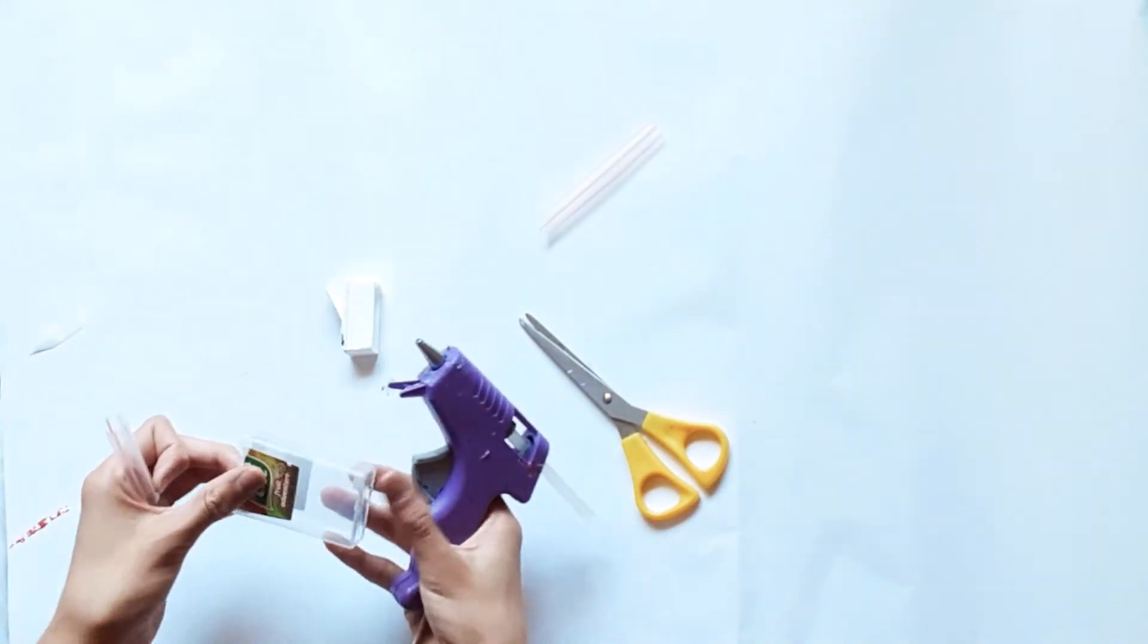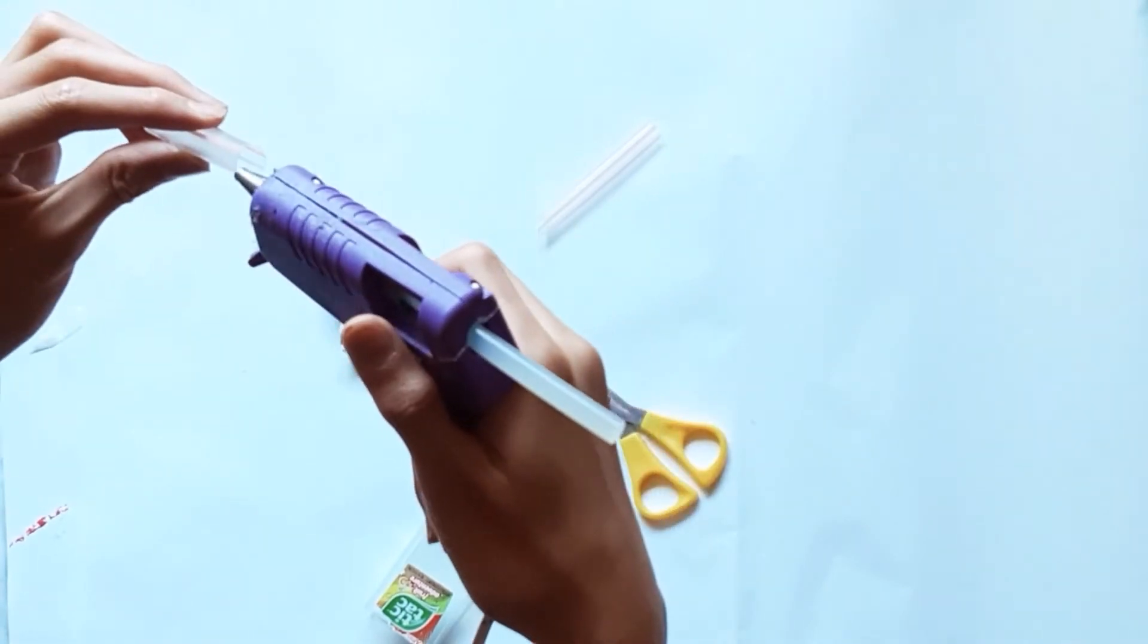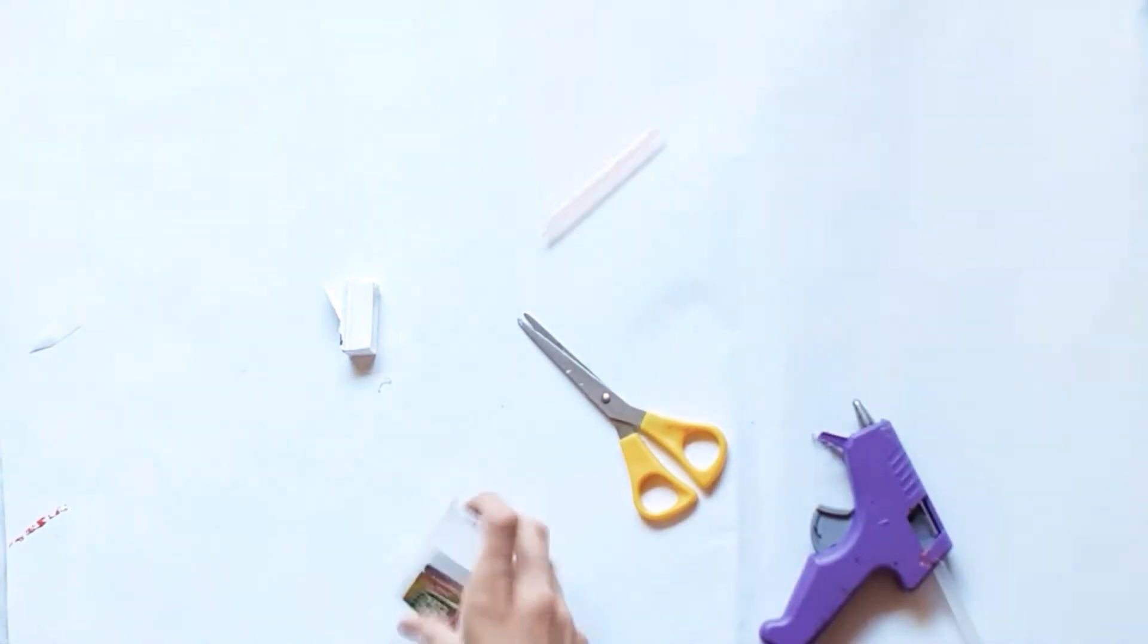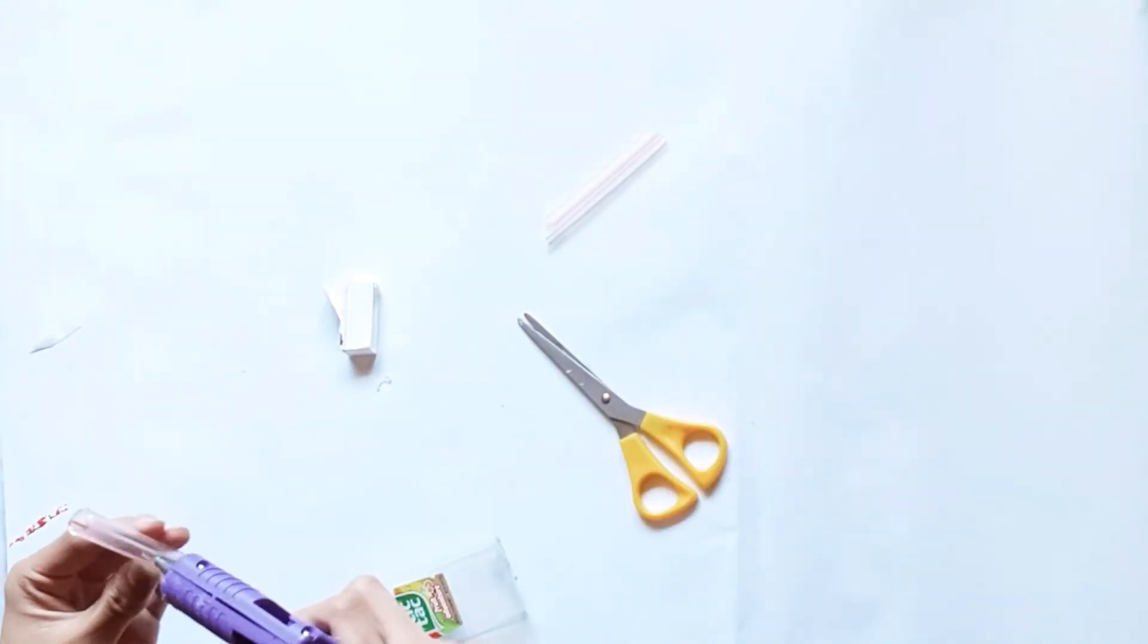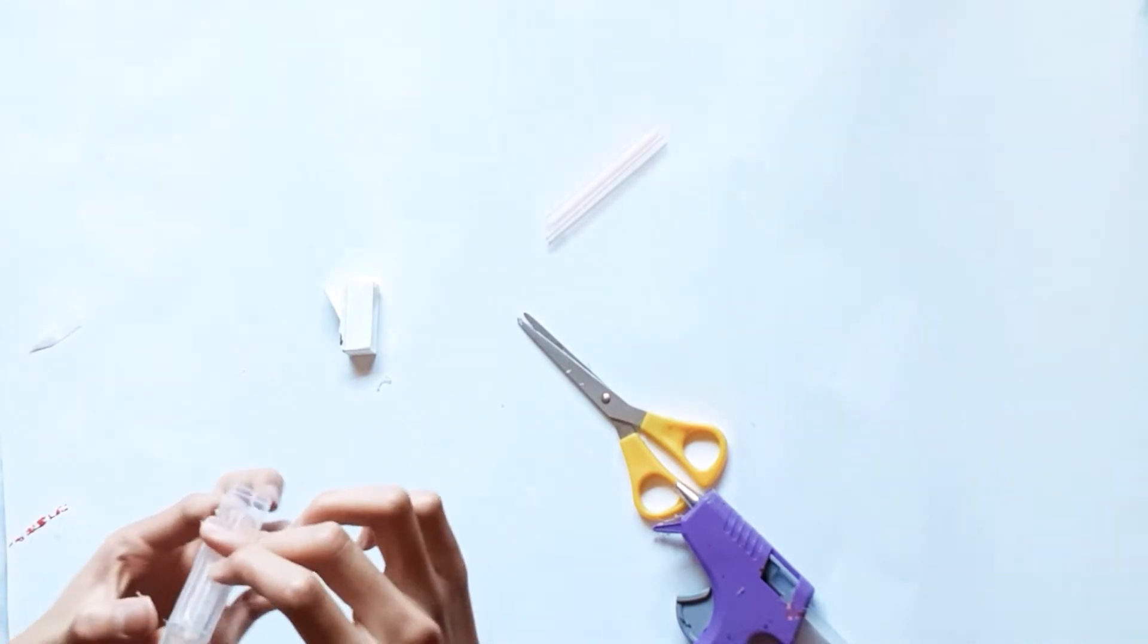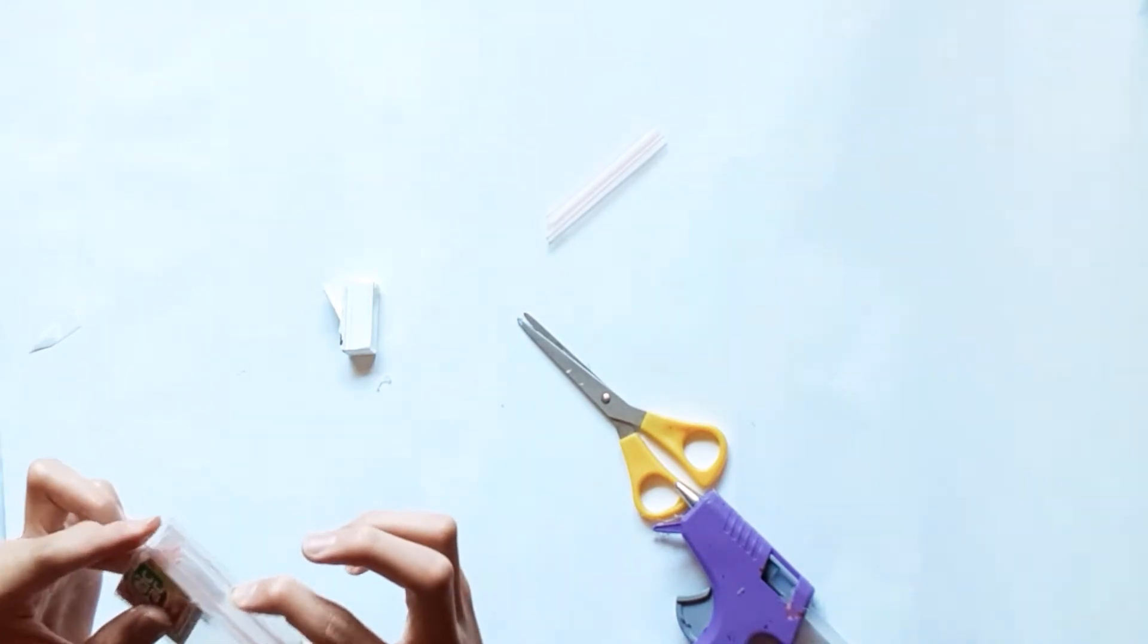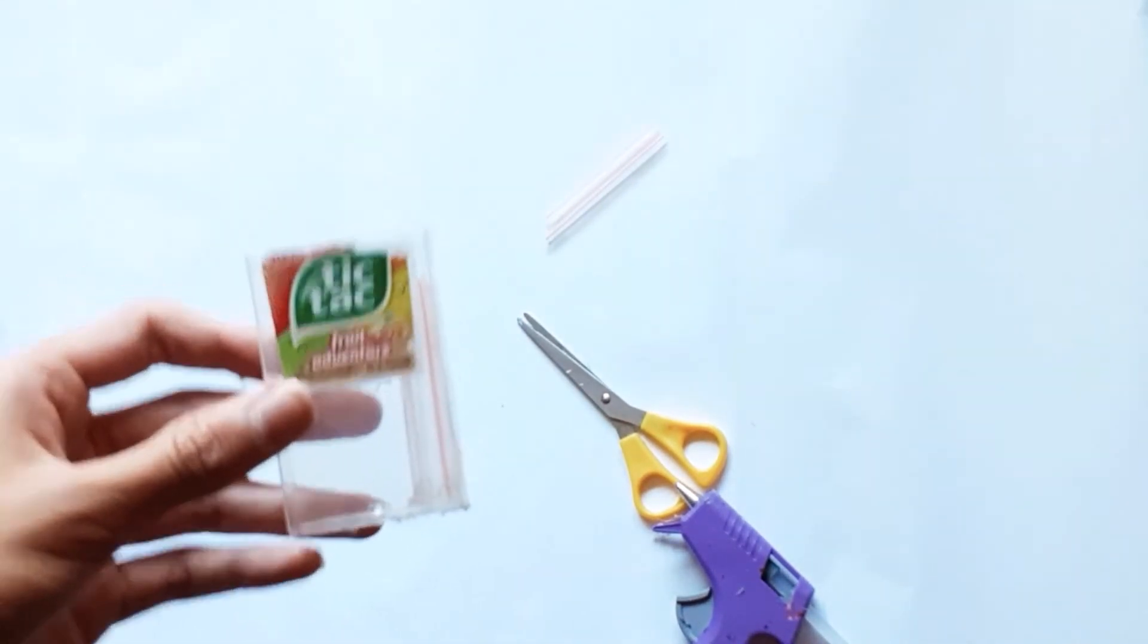Alright. Now, we are going to glue it to the Tic-Tac container. So we're going to put some glue on the bottom, but don't cover the hole, cause that's where the dart is going to go through. We're also going to put some glue on the side. And then now, we're going to put it in, like this.